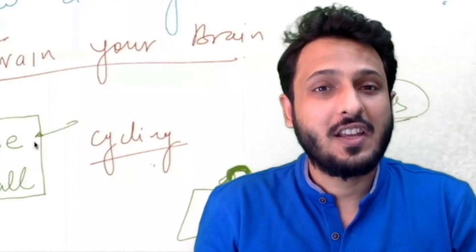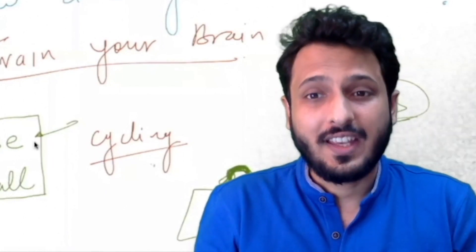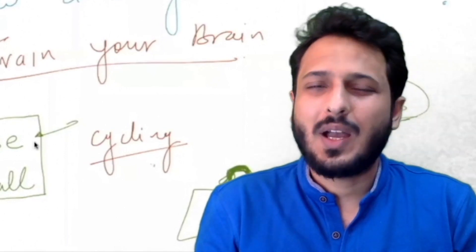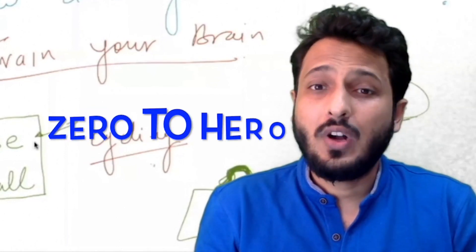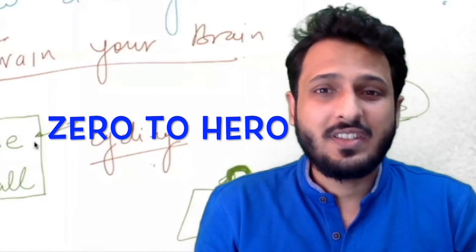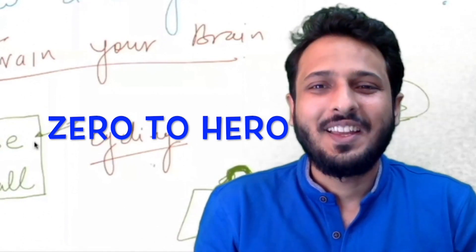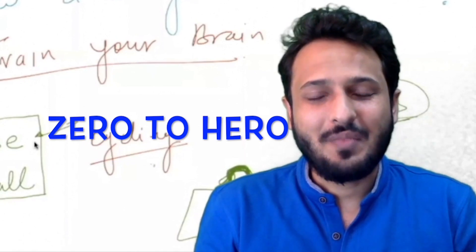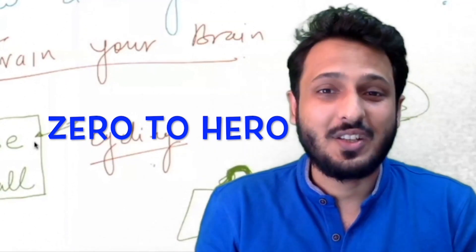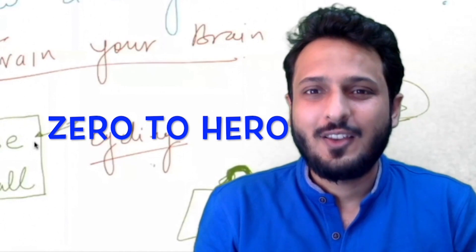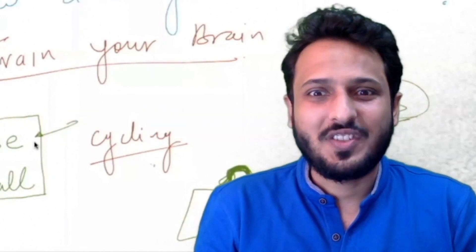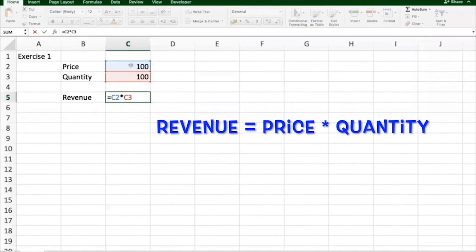I'll share some Excel exercises which will take you from a very basic level to a good enough level required in the next two videos to make a three-statement financial model from a blank Excel sheet. Watch this video till the end. This blue cell is called C2 because the column is C and the row is two.